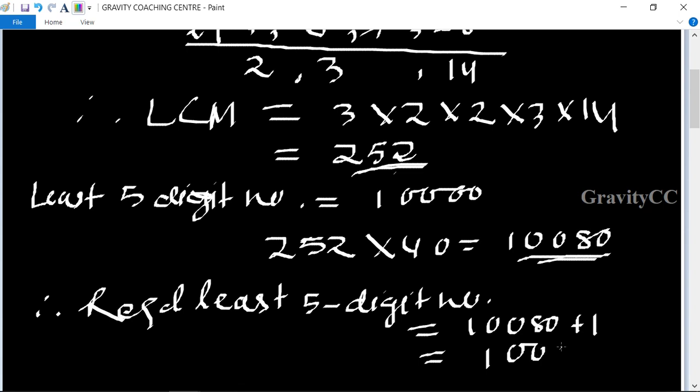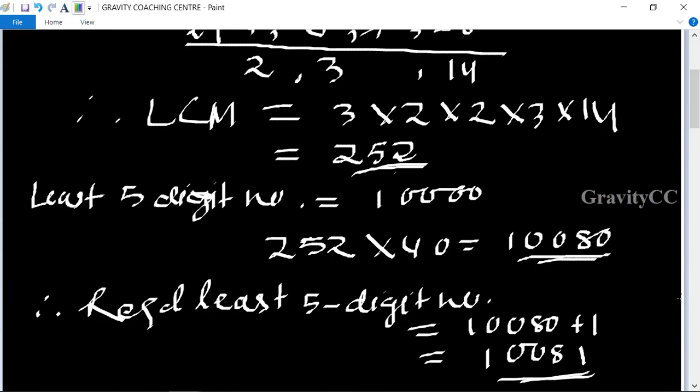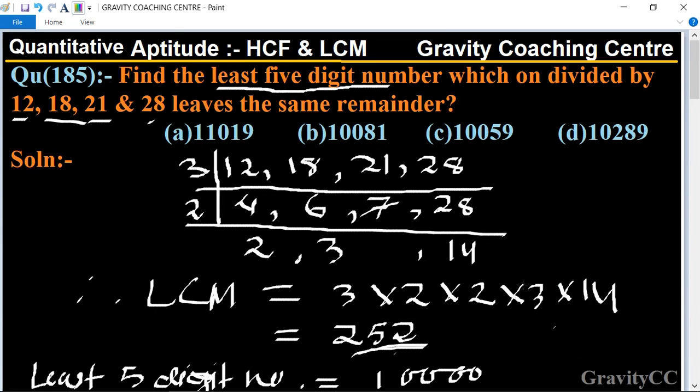That is 10,081. 10,081 is such a number that if we divide it by these numbers, the remainder will be one for all. So the answer is B.